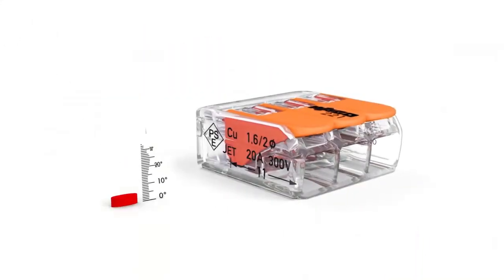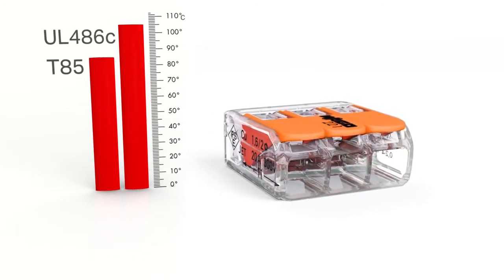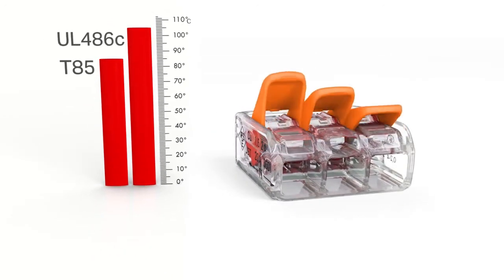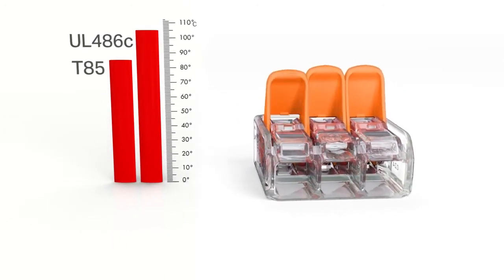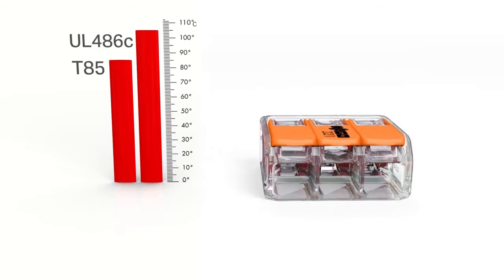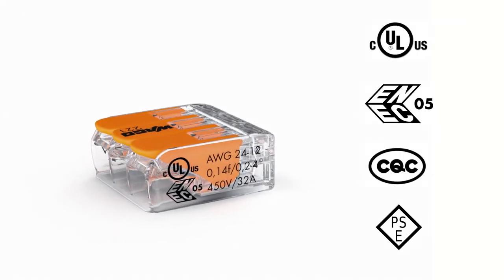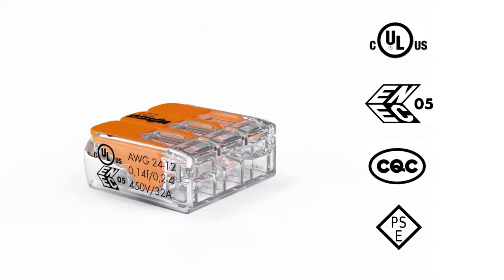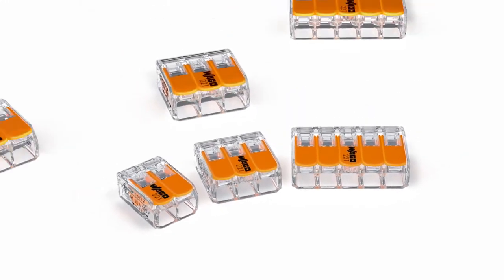The 221 series has an operating temperature rating of 105 degrees Celsius, making it ideal for a variety of industrial environments. These connectors are CULUS listed according to UL486C. Benefit from economical installations with WAGO's 221 series splicing connector for all copper conductor types.